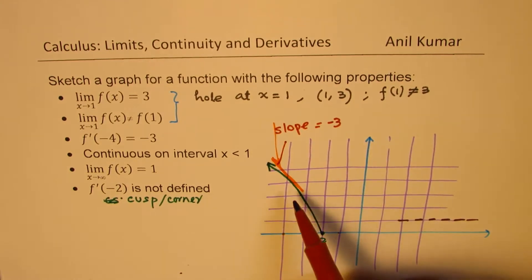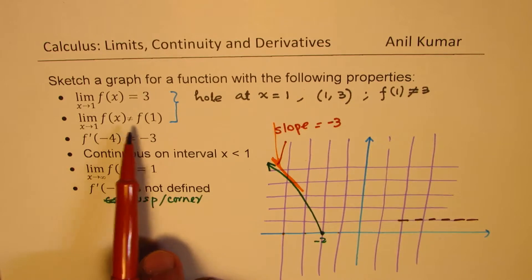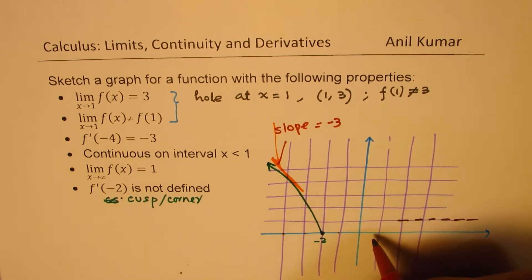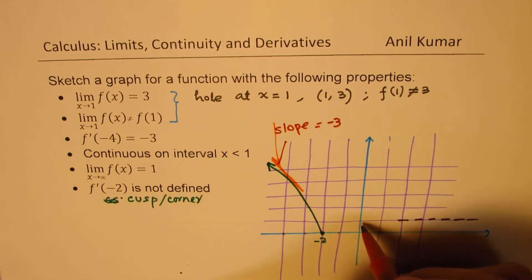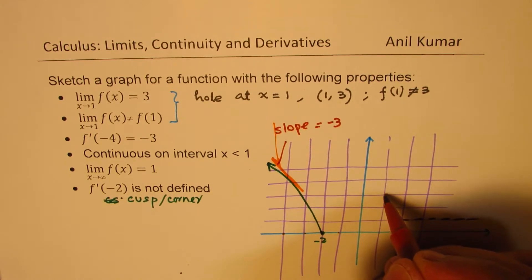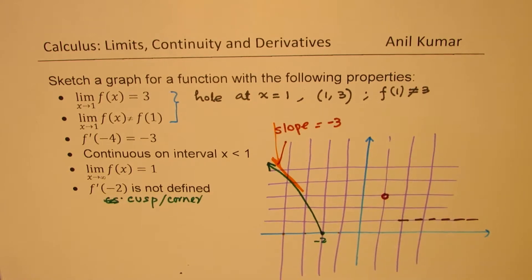So we are assuming that this slope is minus 3. So it's kind of like this. Now, at 1, we have the function approaching 3. That means 1, 2, 3. So at 1, we are approaching 3. So that is the point at 1.